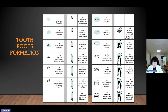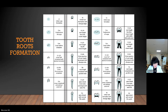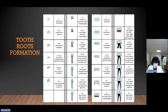The primary dentition develops during both the embryonic and fetal periods of prenatal development. Most of the permanent dentition is formed during the fetal period. Tooth development continues for years after birth, especially considering the formation of the permanent second and third molars. These teeth have the longest developmental period of any set of organs in the body. Odontogenesis of the primary dentition begins between the sixth and seventh week of prenatal development during the embryonic period.